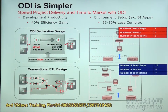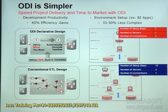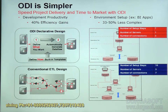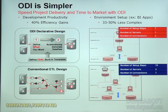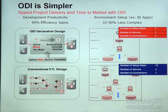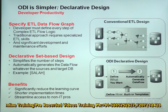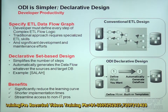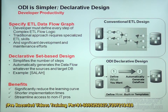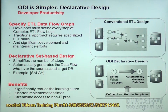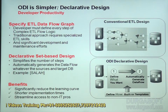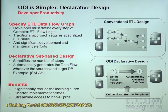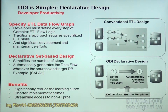ODI speeds project delivery and time to market with 40% efficiency gains in development productivity. Environment setup comparison: with ODI, BI apps out-of-box configuration requires 1 server and 3 connections; conventional ETL requires 10 setups, 3 servers, and 7 connections — making ODI 33 to 50% less complex. ODI's declarative design approach means the developer simply defines what they want, an automatically generated data flow is produced using built-in templates, and data is loaded from source to target.